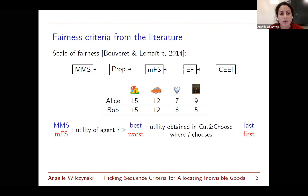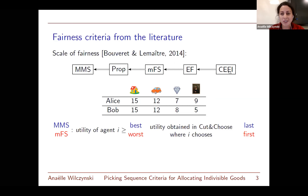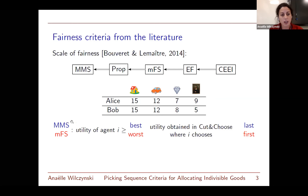In the literature there are several fairness criteria: Competitive Equilibrium with Equal Incomes (CEEI), Envy-freeness, Min-max fair share, Proportionality, and Maximum Fair Share (MMS). According to Bouverie and Lemaitre, under additive utilities there exists a scale of fairness where CEEI is the strongest requirement and MMS is the weakest. However, an allocation satisfying MMS does not always exist.